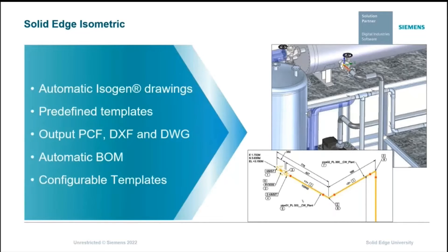Coming to Solid Edge Isometrics — automated isometric drawings are easily created from the 3D piping design. The drawing and bill of material reports can adhere to predefined or customized templates. Material list tables for fabrication and erection, along with pipe cutting tables, can be automatically created. The output files can be saved in PCF, DWG, and DXF formats.